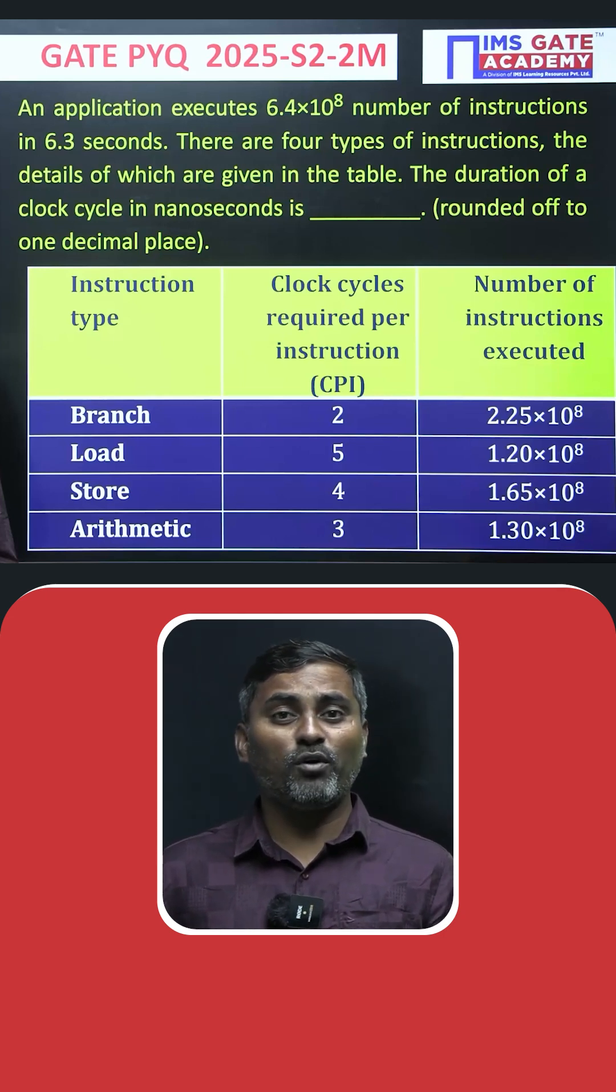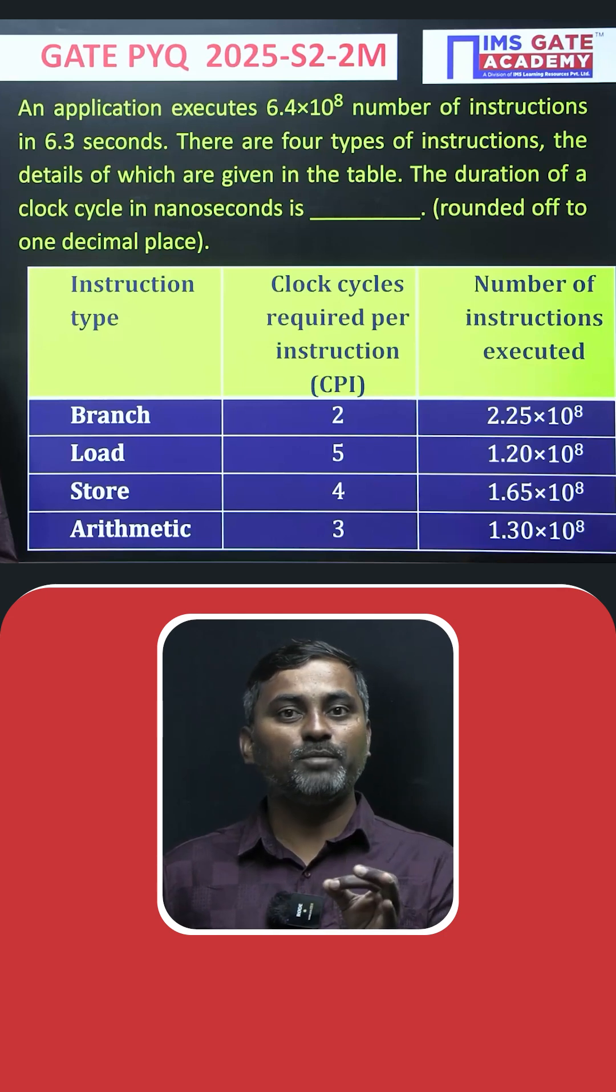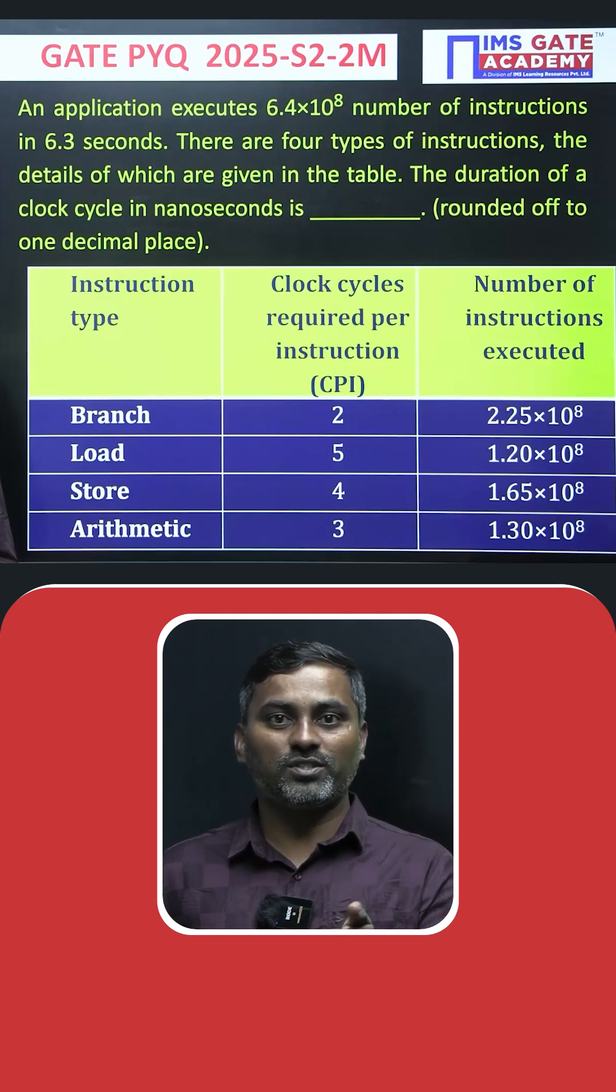These 6.4 × 10^8 instructions are classified into categories: Branch type, Load, Store, and Arithmetic operations. A table is given showing the type of instructions, the number of CPU clock cycles per each instruction, and how many instructions of each type are there.